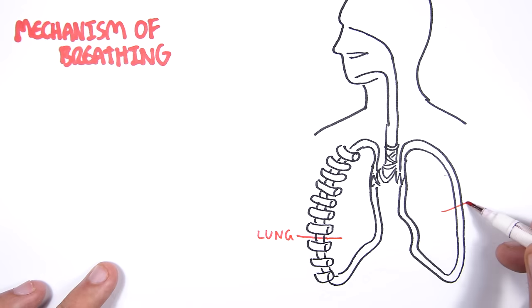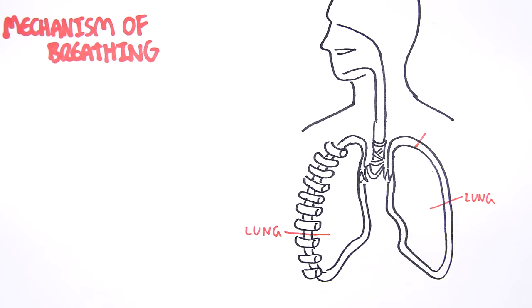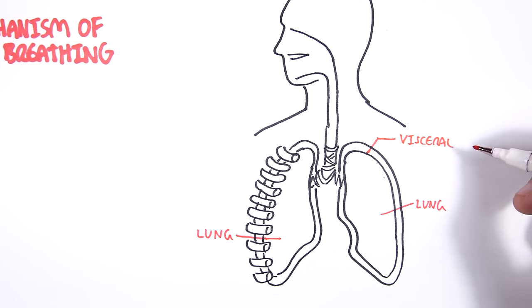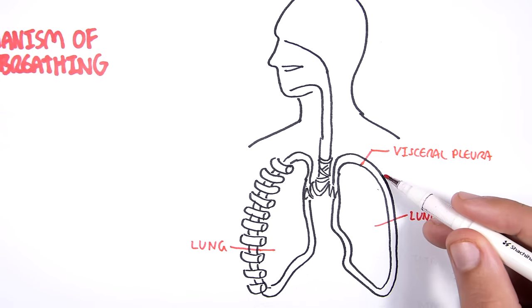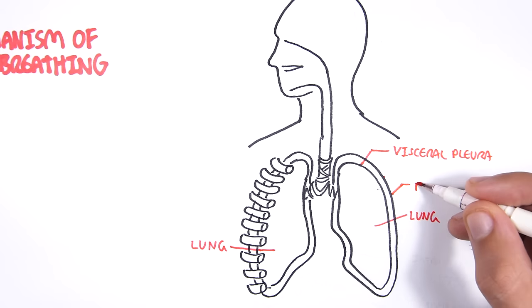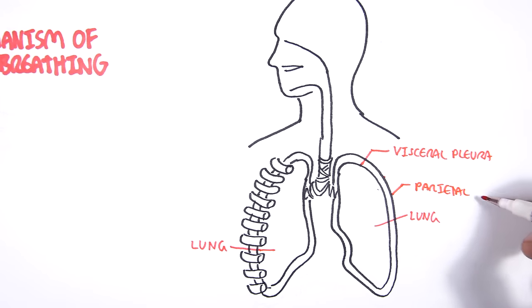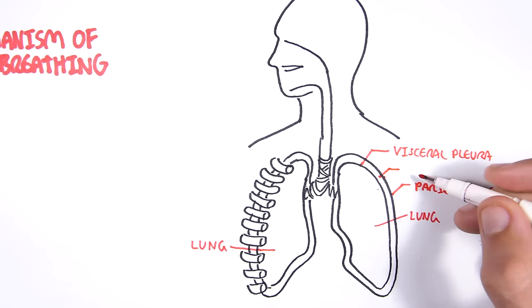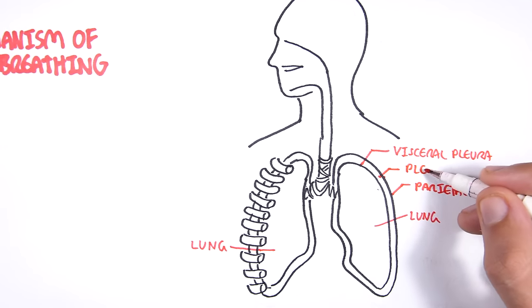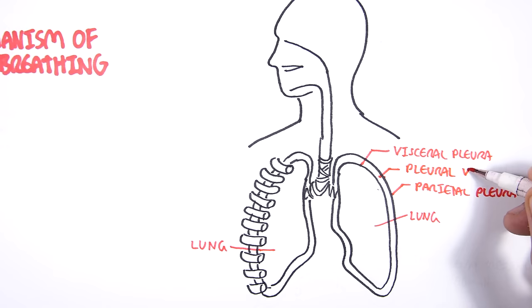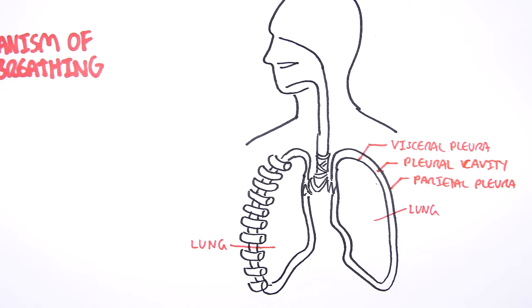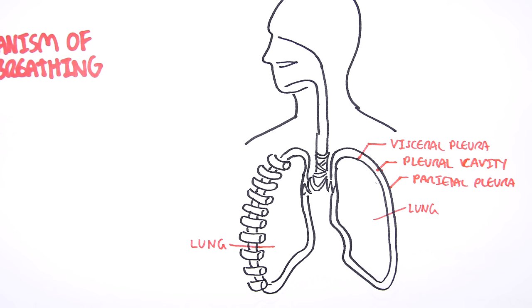Surrounding the lungs we have the visceral pleura, which is a type of serous membrane. Around that we have another layer called the parietal pleura. The parietal and visceral pleura are actually part of the same serous membrane — it just folds on itself. In between them we have what's called the pleural cavity.